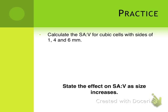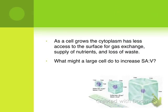Now let's talk about the importance of this ratio. Here's a diagram that sums it up: as the cell grows, the cytoplasm has less access to the surface for gas exchange, supply of nutrients, and loss of waste, and anything else the cell may need. This diagram shows that as the cell grows, the nucleus has less and less access, so items have to travel much further to supply the entire cell.